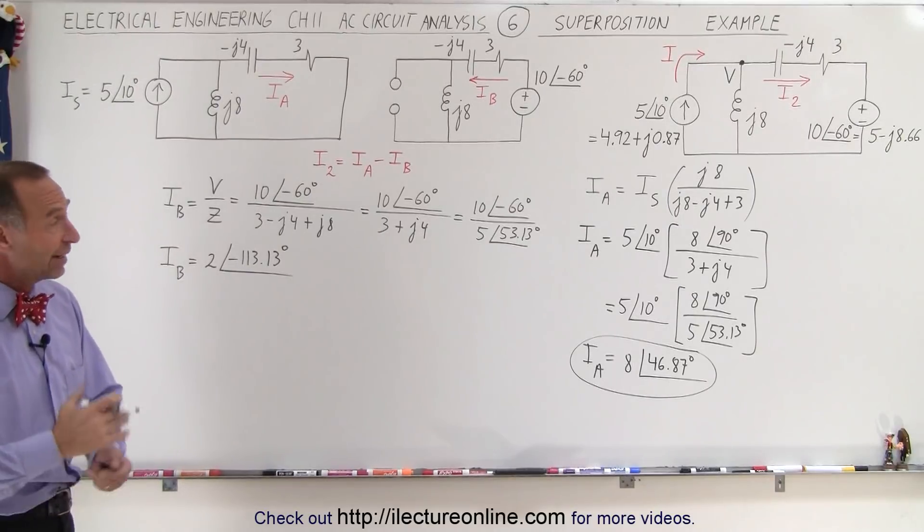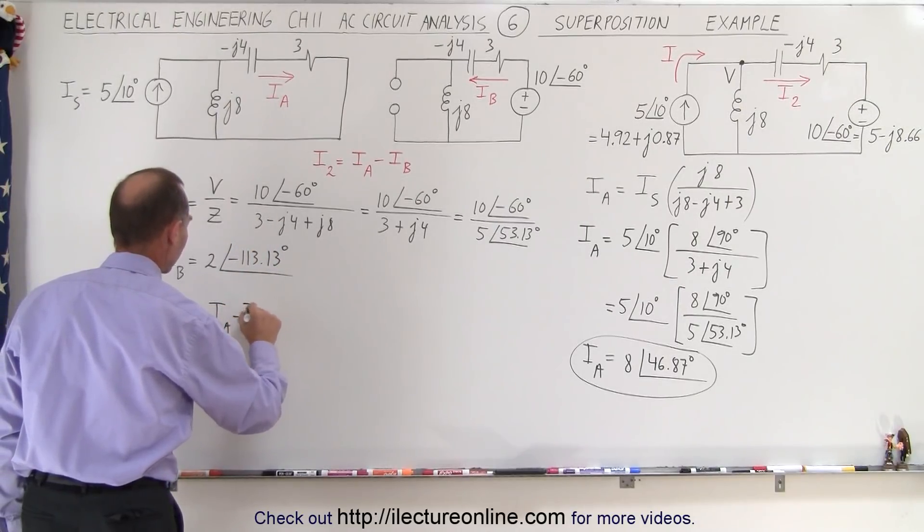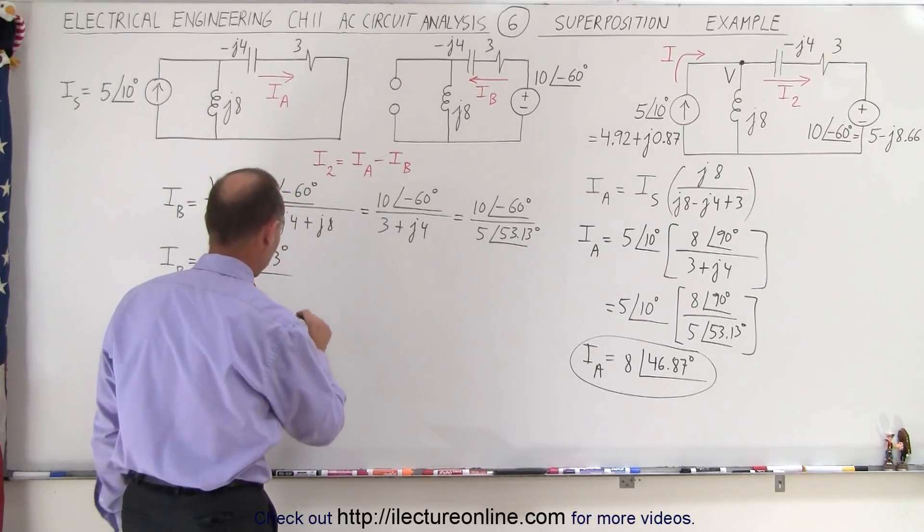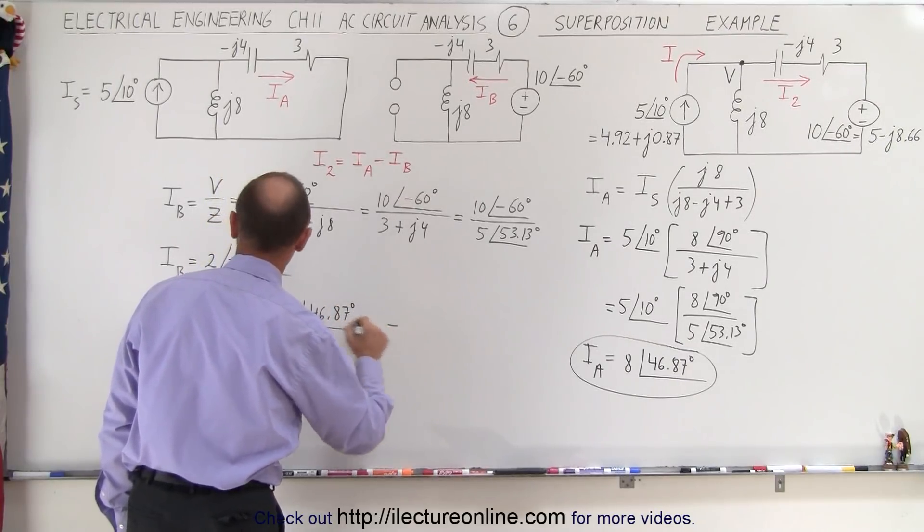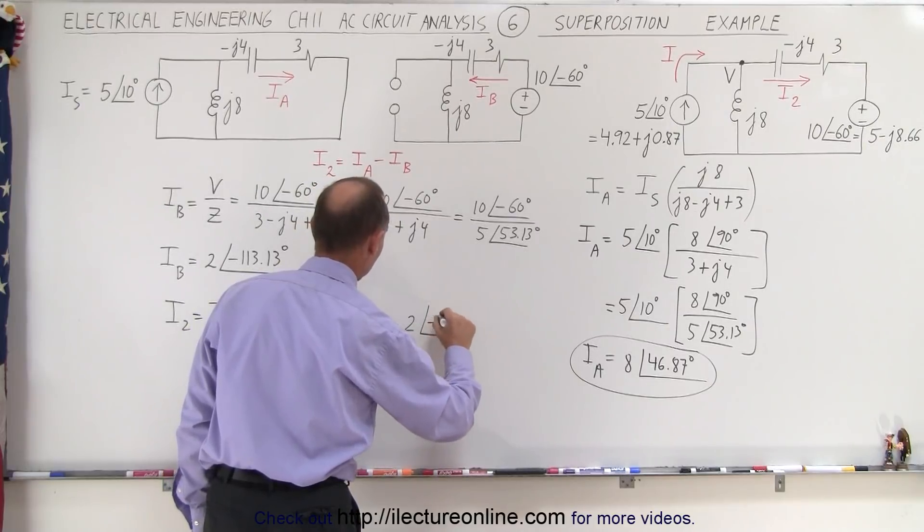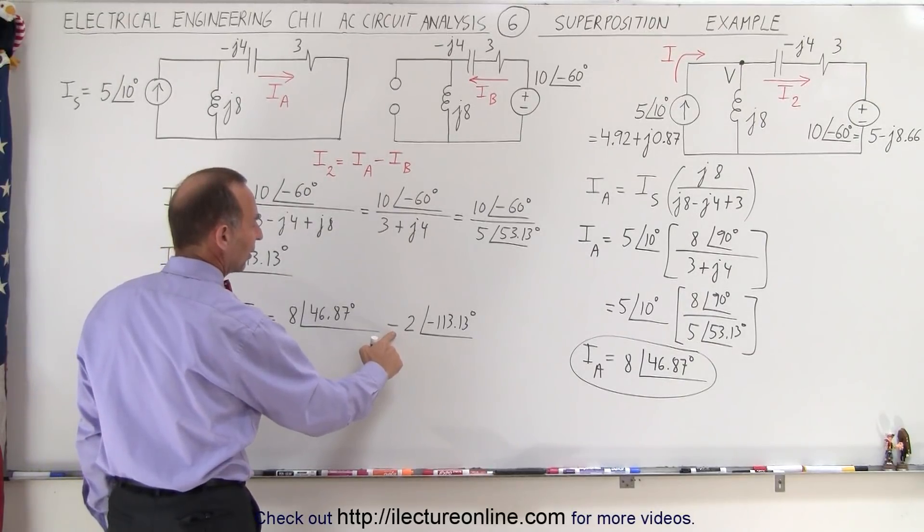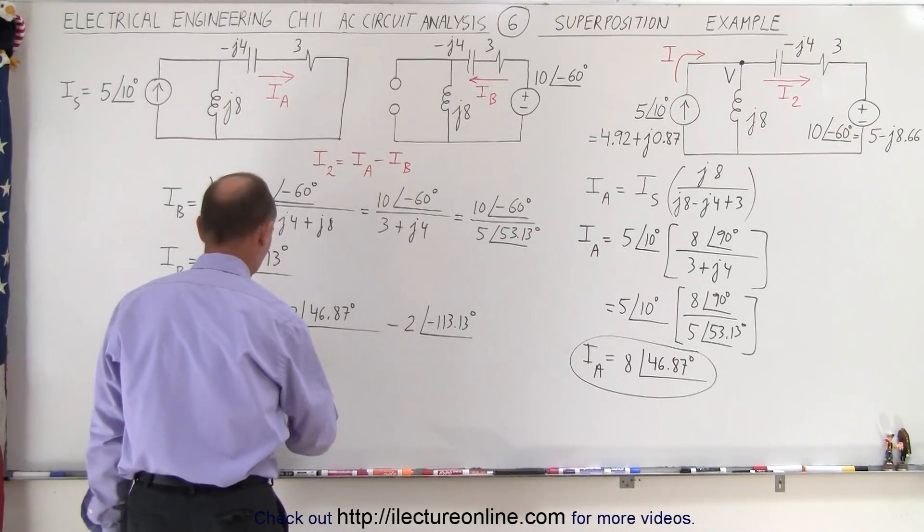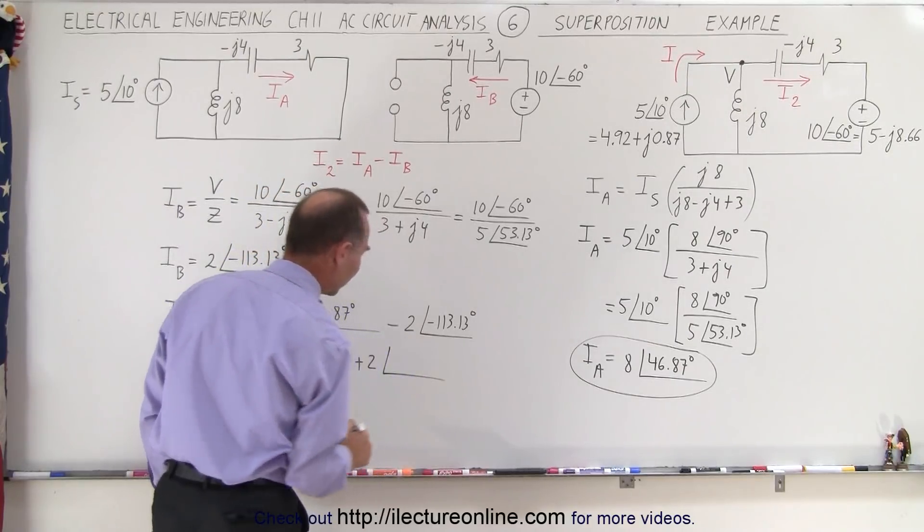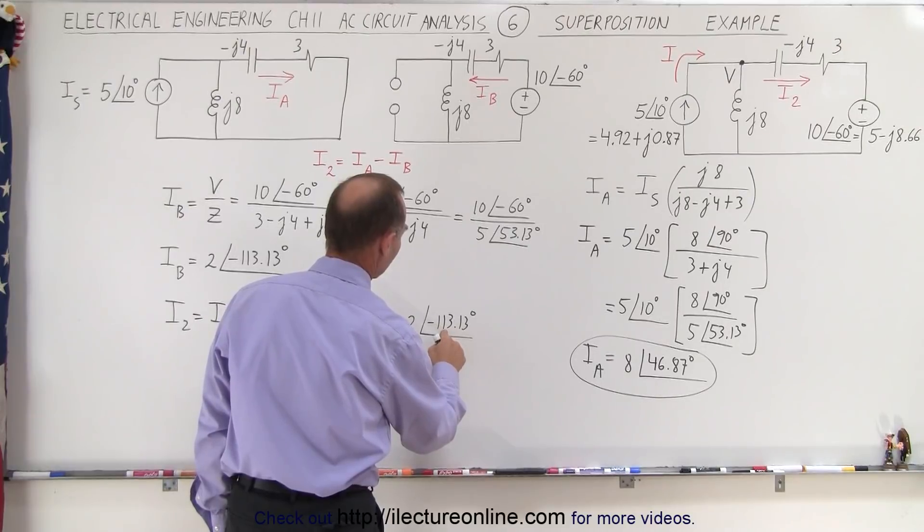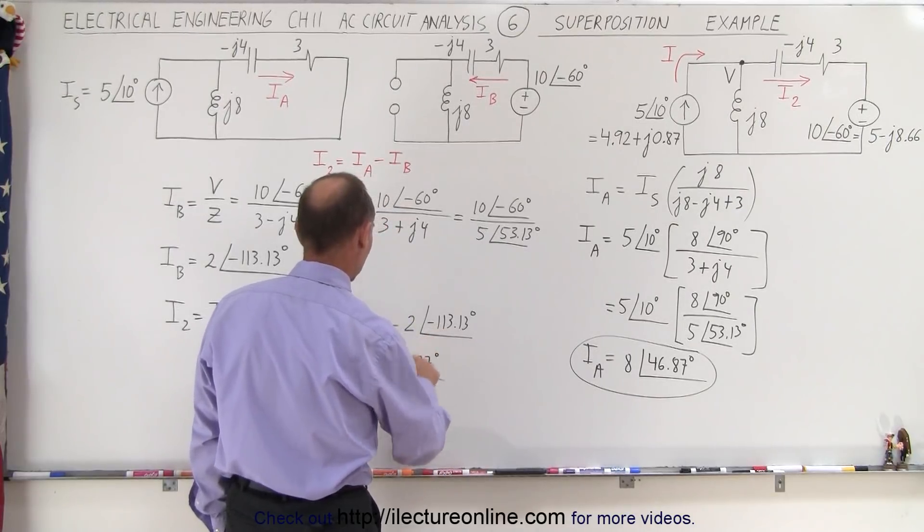All right so now we need to find I sub 2. I sub 2 is equal to IA minus IB, which is equal to IA which is 8 with a phase angle of 46.87 degrees minus IB which is 2 with a phase angle of minus 113.13 degrees. And we can get rid of the minus here by adding 180 degrees to that, so that would be equal to 8 with a phase angle of 46.87 degrees plus 2 with a phase angle of 180, that would be 66.67 degrees. Add that to 113, that's 170, yep that looks about right. But now before we can add it we have to convert that to real and imaginary parts.